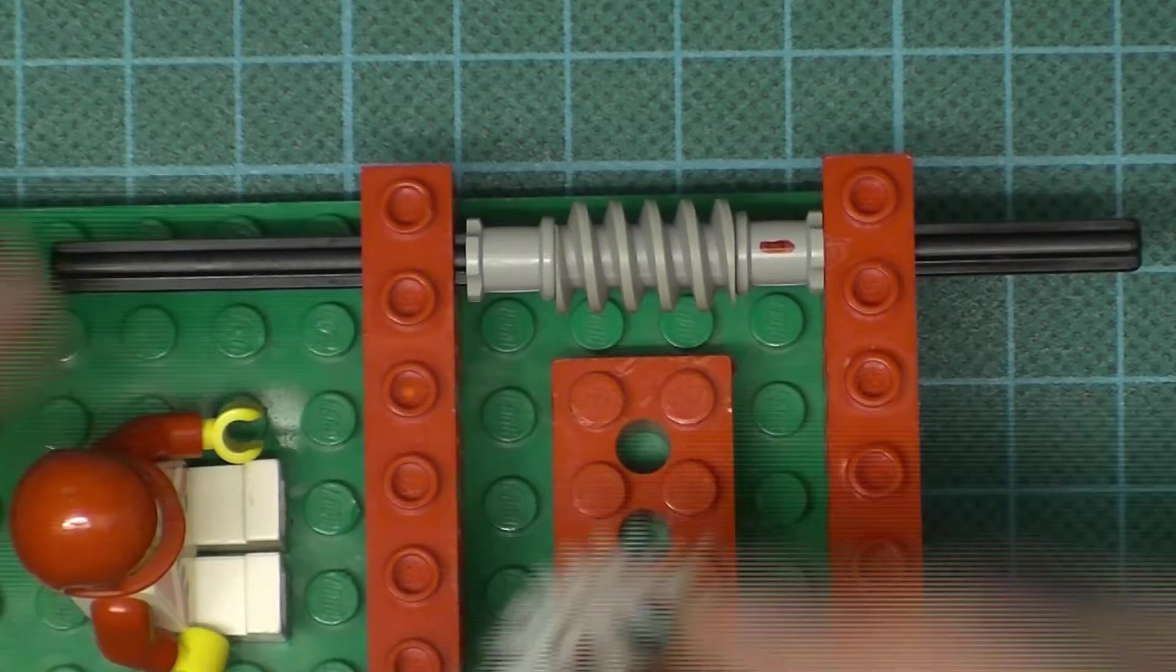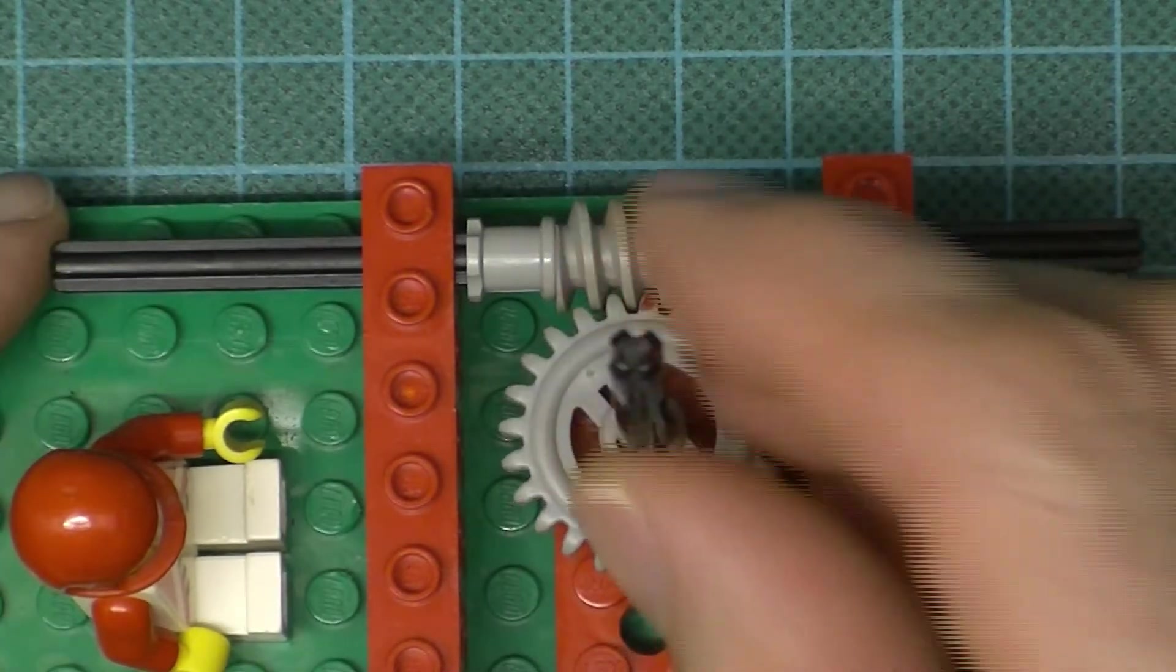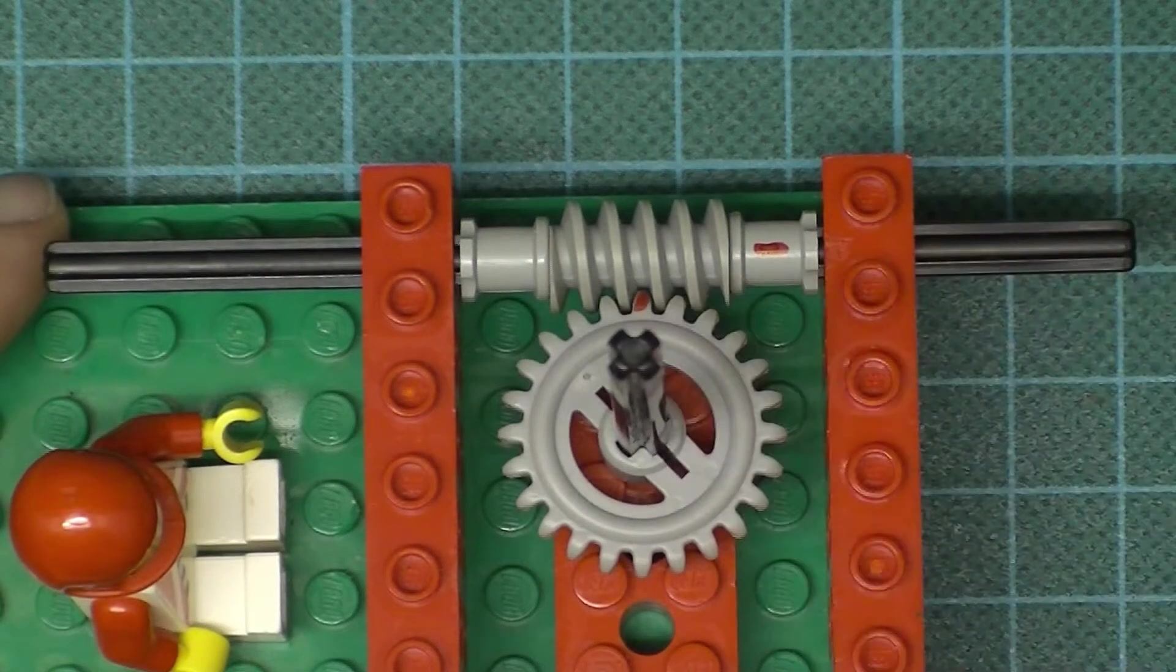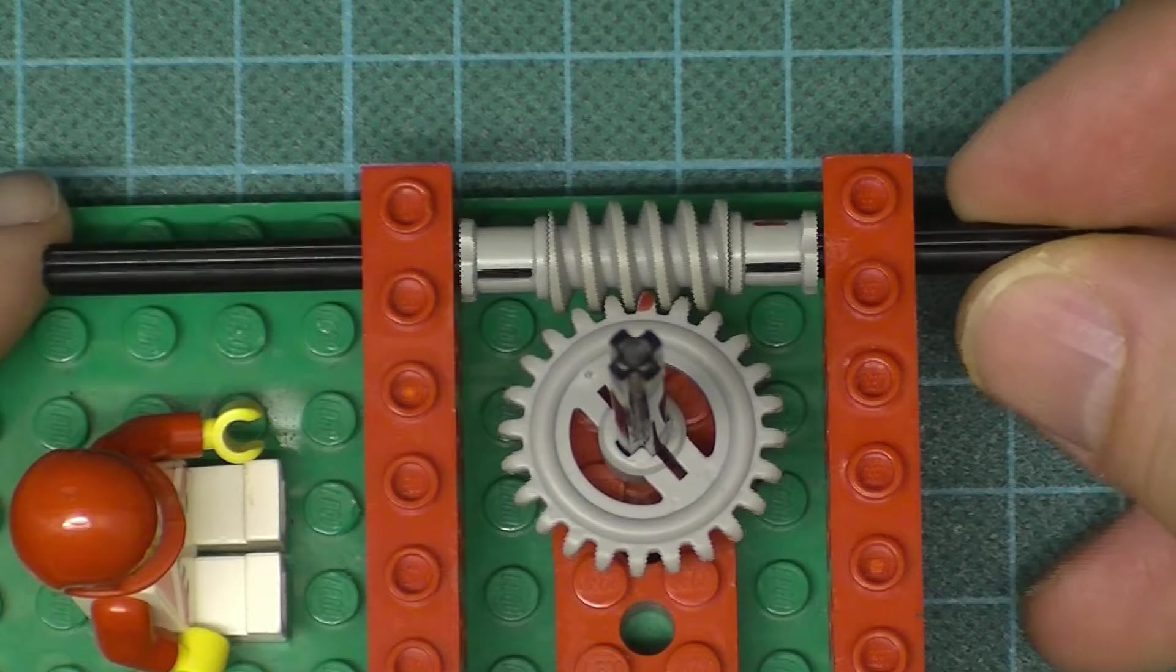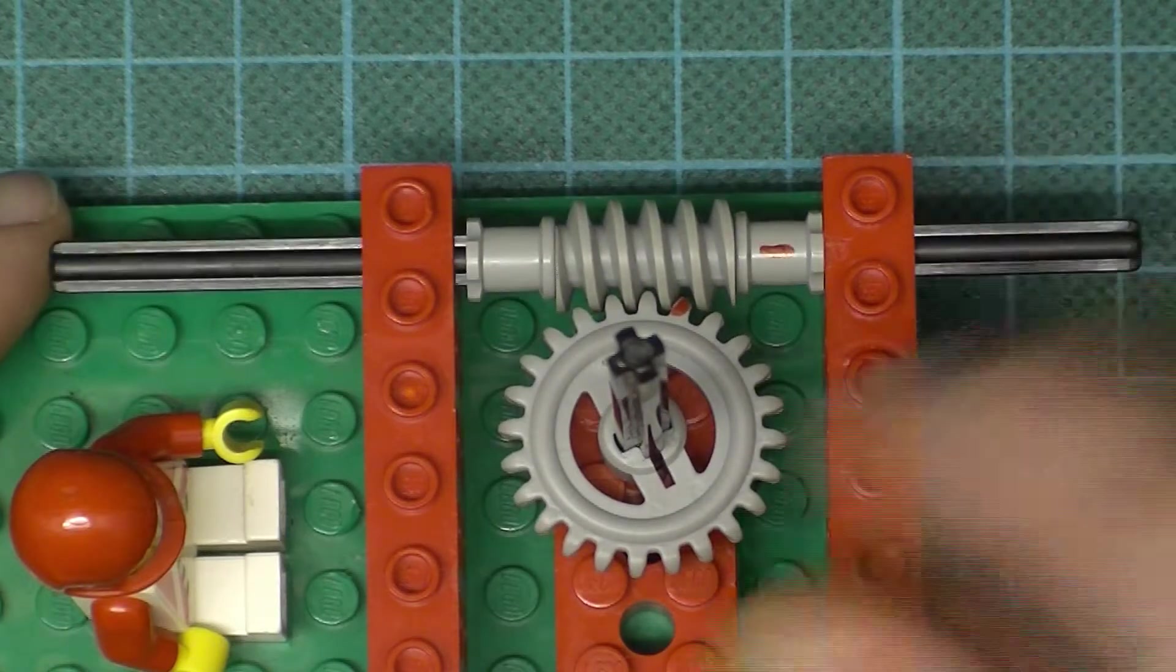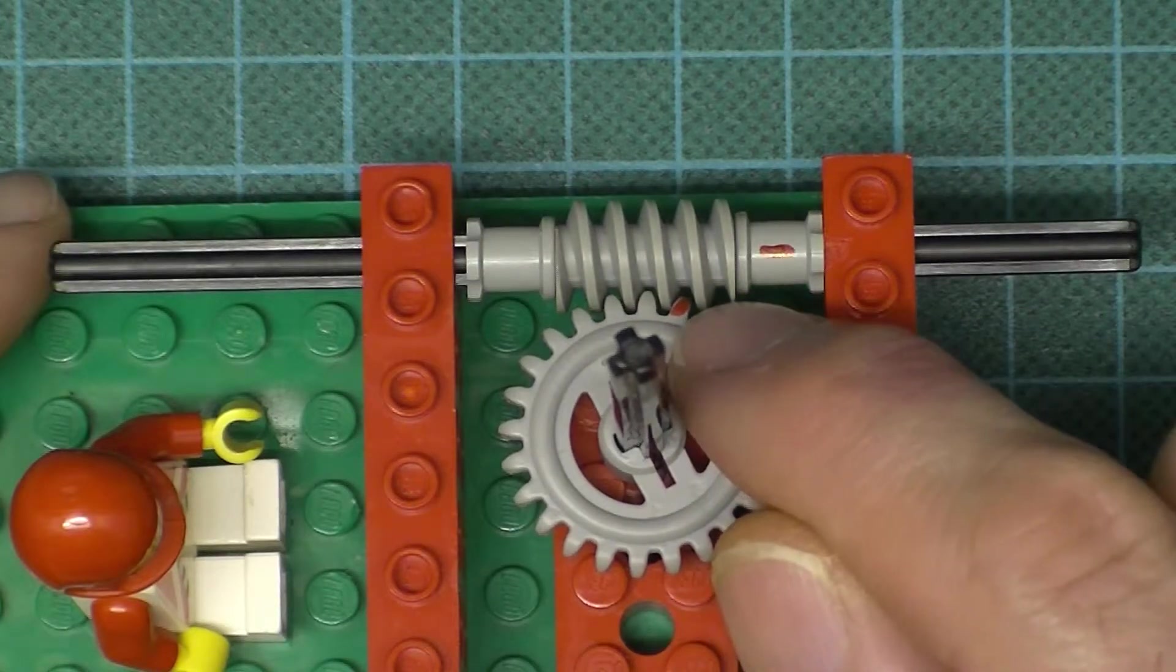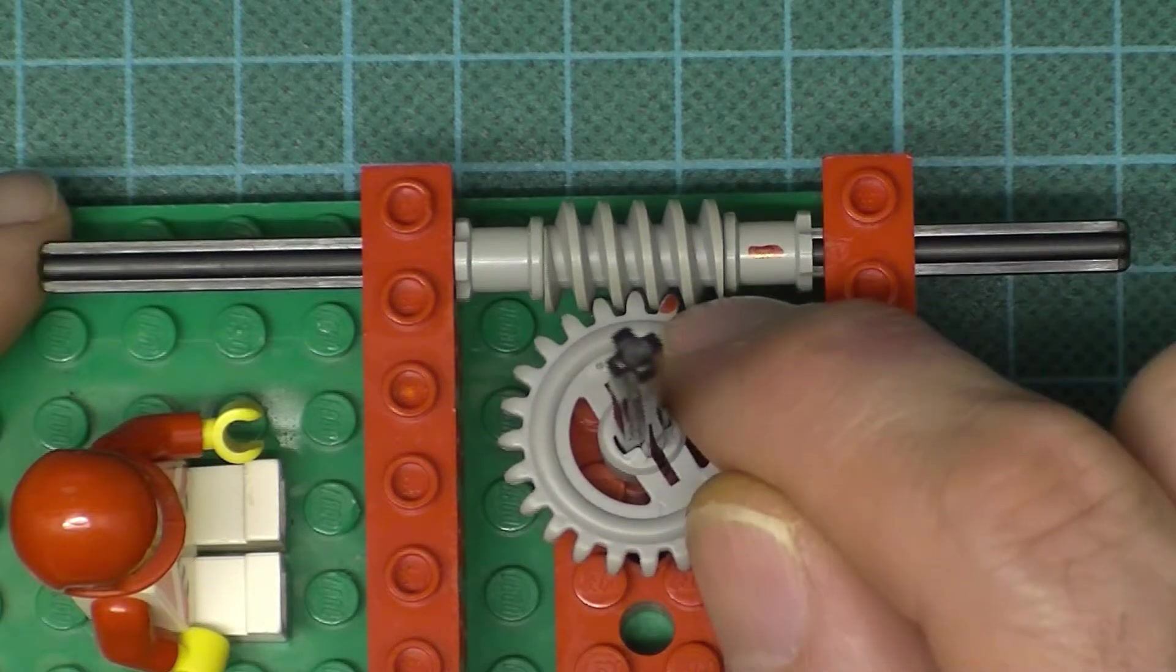Now let's see what happens when I rotate this by just one rotation. Did you notice that this tooth—or this gear—only advanced by one tooth?